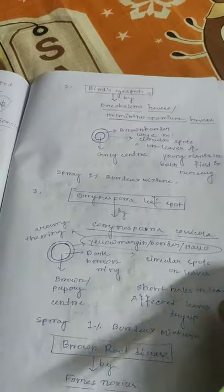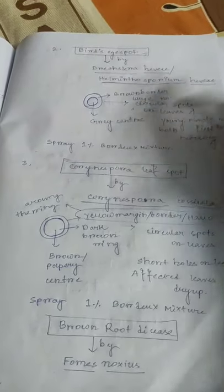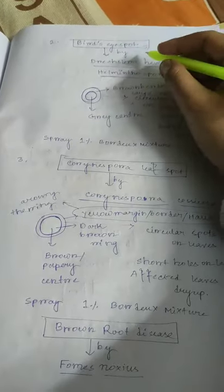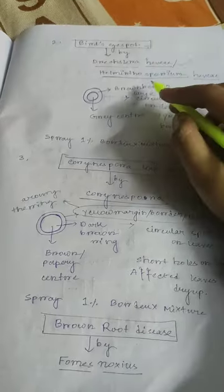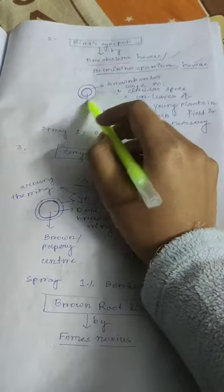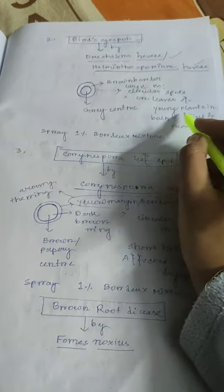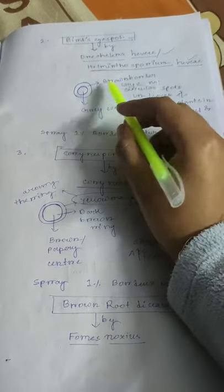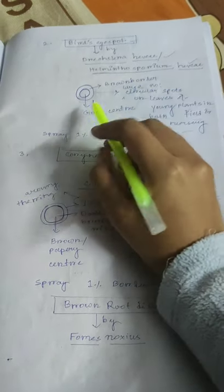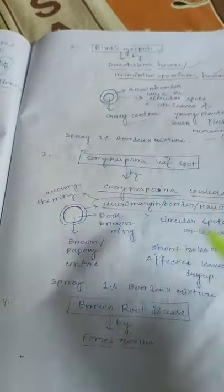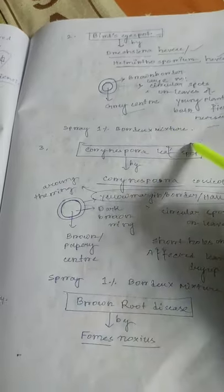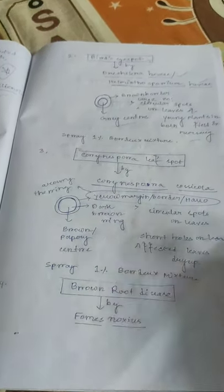The second type of disease of rubber is Bird's eye spot. Bird's eye spot is caused by Drechslera heveae or Helminthosporium heveae. Circular spots are found on leaves of young plants in both field and nursery. The spots have a brown border and grey center. Control is by spraying 1% Bordeaux mixture.